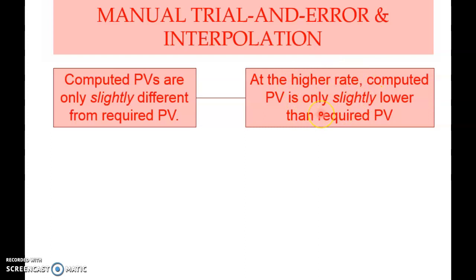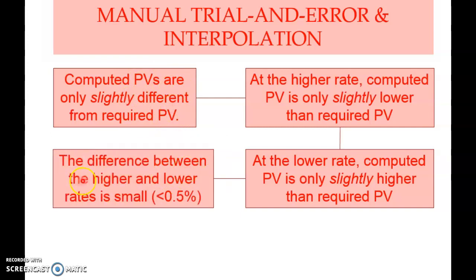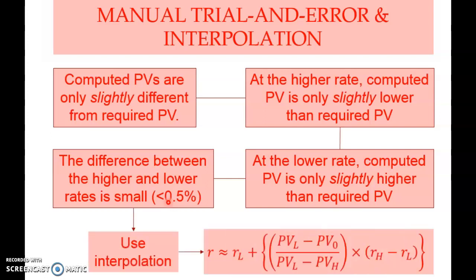Condition 1 has two parts: (1a) at the higher rate, the computed present value is only slightly lower than the required present value; and (1b) at the lower rate, the computed present value is only slightly higher than required. Condition 2 is that the difference between the higher and lower rates tried must be small — less than 0.5 percent is considered small.